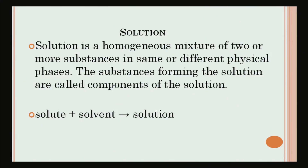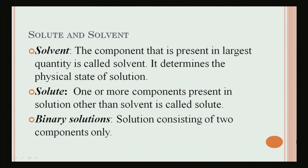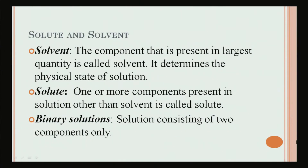A solution is a homogeneous mixture of two or more substances in the same or different physical phases. The substances forming the solution are called components of the solution. In a solution we have two components: one is solute and the other is solvent. The solvent is the component present in the largest quantity and it determines the physical state of the solution — for example, water is a solvent. The solute is one or more components present in the solution other than the solvent, such as sugar or salt.